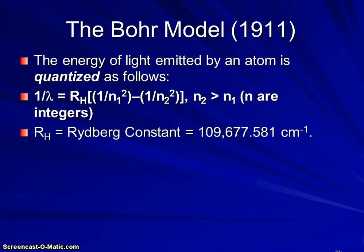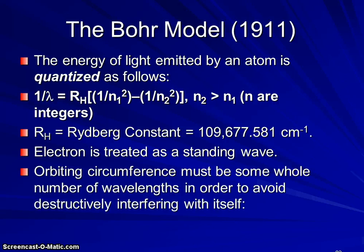Rydberg's constant, experimentally, comes out to this number, 109,677.581 reciprocal centimeters. So in this case, we're measuring wavelength in centimeters. And the assumption then that Niels Bohr came up with to explain this experimental observation is if we treat the electron as a wave that's orbiting a particular circumference, the circumference has to be some whole number of wavelengths in order to avoid having the electron's waves destructively interfere with themselves.